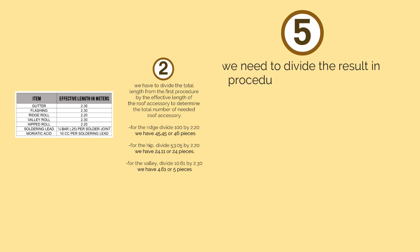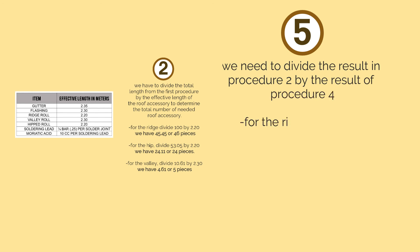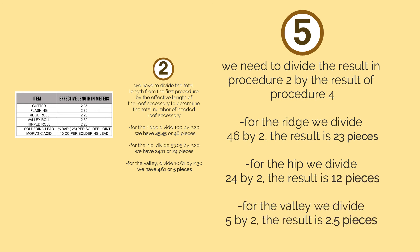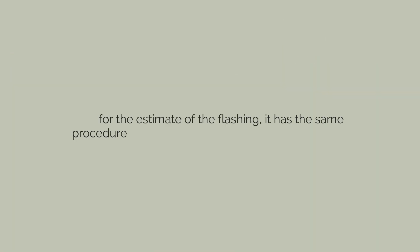For the last procedure, divide the result from procedure 2 by the result of procedure 4. For the ridge, we divide 46 by 2 — result is 23 pieces. For the hip, we divide 24 by 2 — result is 12 pieces. For the valley, we divide 5 by 2 — result is 2.5 pieces. Therefore, we need 23 plain GI sheets for the ridge roll, 12 plain GI sheets for the hip rolls, and 2.5 plain GI sheets for the valley roll.